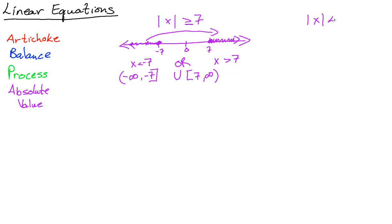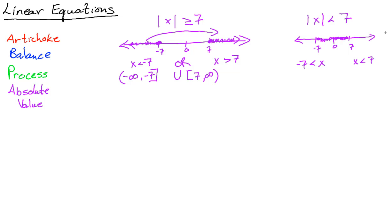For |x| < 7: numbers like 6, 5, 4... work, but you don't go on forever — it's trapped. You get x < 7 and x > −7, notice the sign switched. This is an 'and' statement, written as −7 < x < 7, and in interval notation it's the open interval (−7, 7). Think of it as distance: the distance must be less than 7, so you're stuck inside the fence.